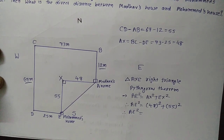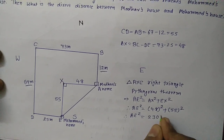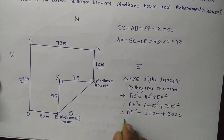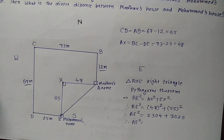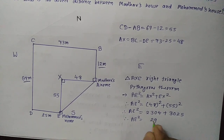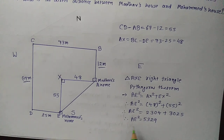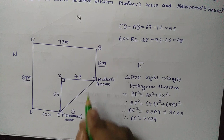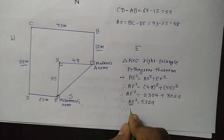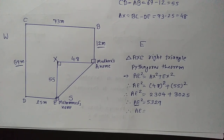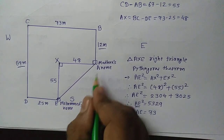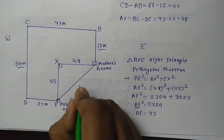48 squared equals 2304. 55 squared equals 3025. So AE² equals 2304 plus 3025, which totals 5329. We need the value of AE, so we take the square root of both sides. AE equals the square root of 5329, which is 73. So the direct distance between Mohammed's house and Madhav's house — that is AE — is equal to 73 meters.